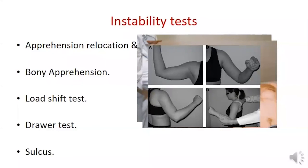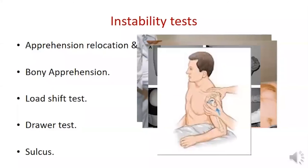Bony apprehension means the apprehension test is positive at low abduction angles. The load shift test is assessed with the arm at rest and the examiner stabilizing the scapula; the other hand applies anterior and posterior translation force to the humeral head to define the percentage of subluxation. The test can be repeated at different degrees of internal/external rotation and abduction.